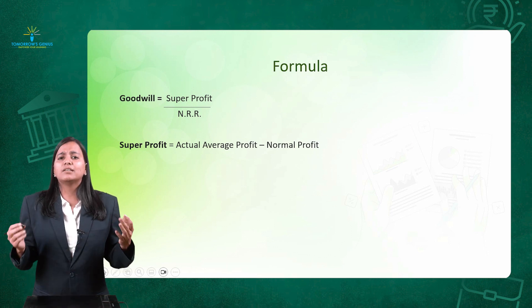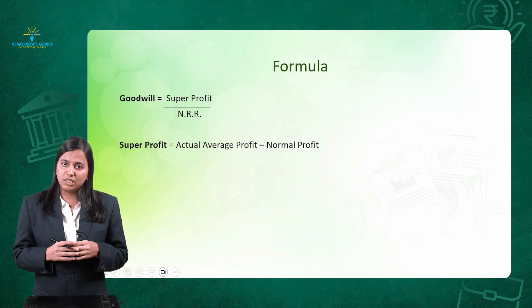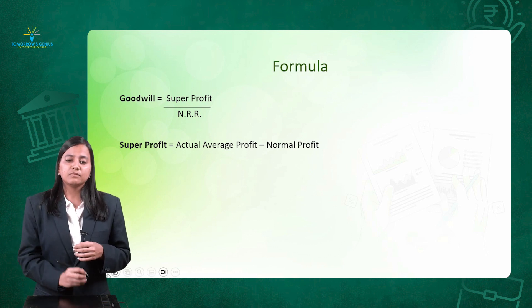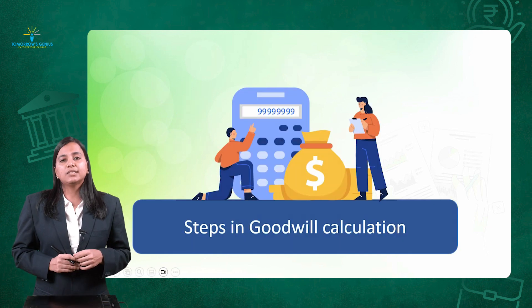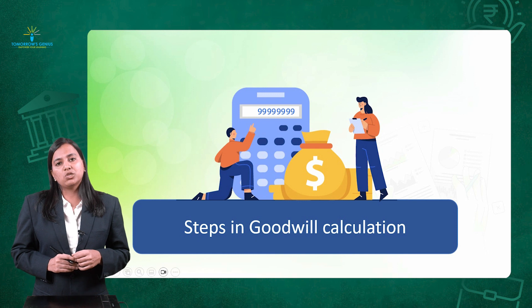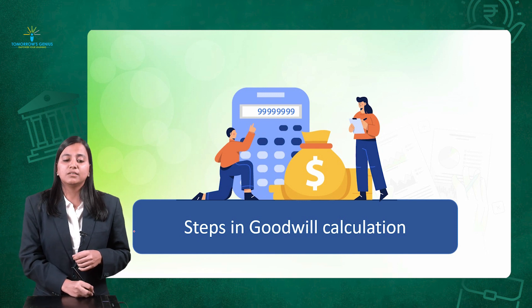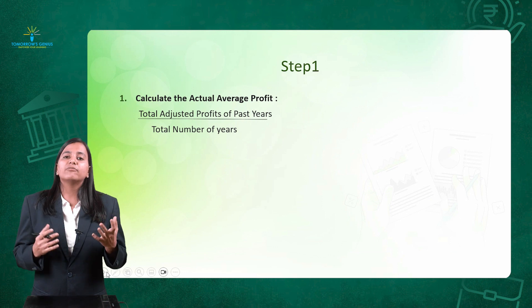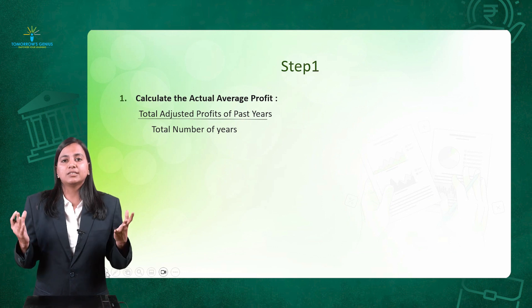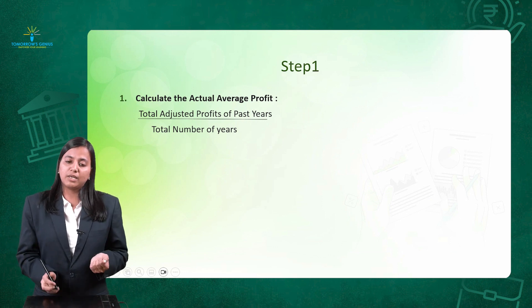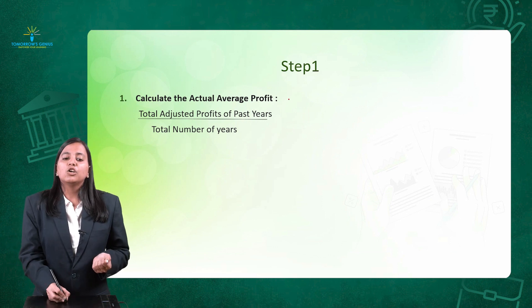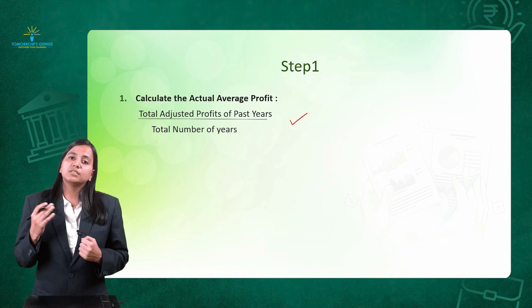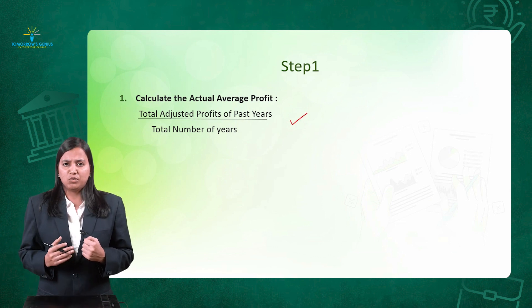Now let's understand the step-by-step calculation. Step number 1: you need the average adjusted profit, which is given by the formula — total adjusted profit of the past years divided by number of years. This was explained in video number 1 where we taught the average profit method.